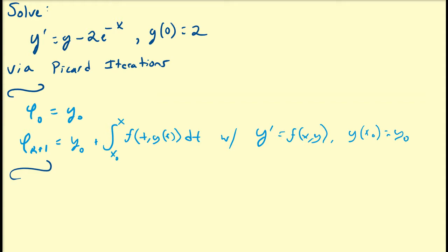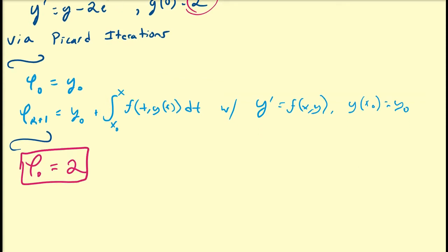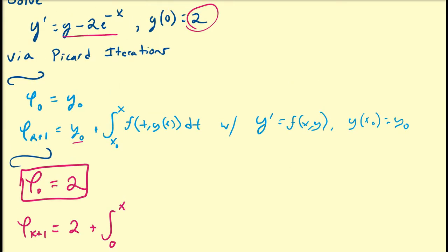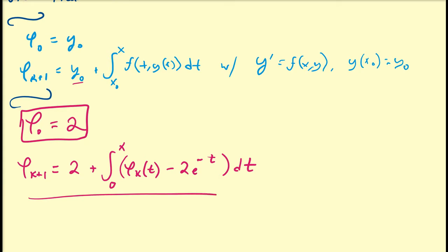So let's get started. We define φ₀ to be equal to y(0), which in this case is 2. From there we define φ_{k+1} to be equal to the initial condition y(0), which is 2, plus the integral from 0 to x of f(t, y(t)). Recalling that the original equation is y minus 2e to the minus x, y is replaced by φ_k and x is replaced by t, giving us φ_k(t) minus 2e^{-t} dt. This is our general iteration scheme.